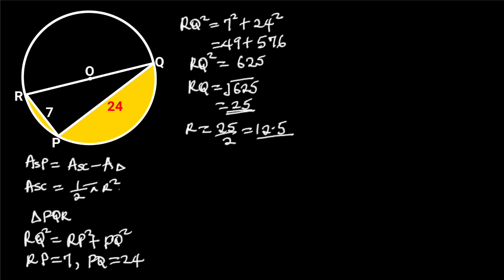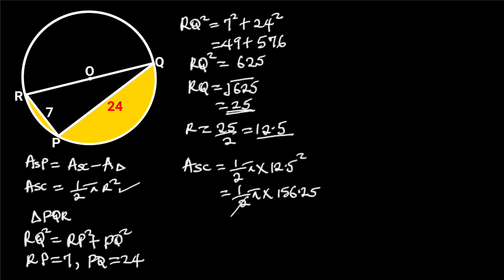If we substitute the radius with 12.5, the area of the semicircle will be one-half times pi times 12.5 squared. 12.5 squared is equal to 156.25, so the area of the semicircle is equal to one-half times pi times 156.25. Since 156.25 divided by 2 is 78.125, the area of the semicircle is equal to 78.125π square units.